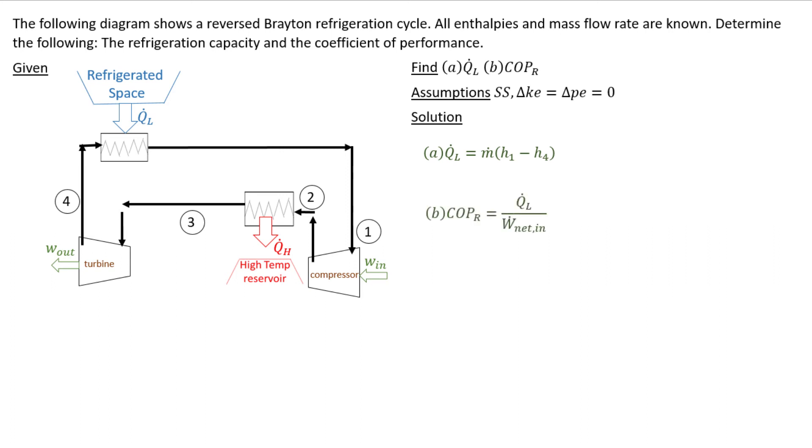And then my coefficient of performance for refrigeration cycle, it's what you're interested in, Q.L, over what you have to put into it, W.net in. W.net in is W.in minus W.out. I don't know why we're writing it again, but we are.